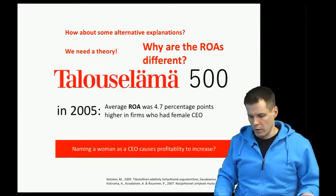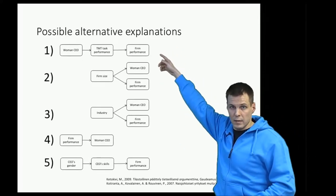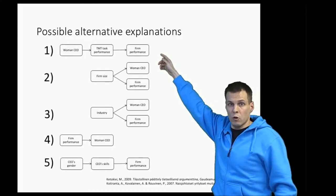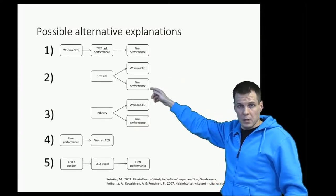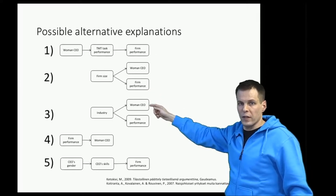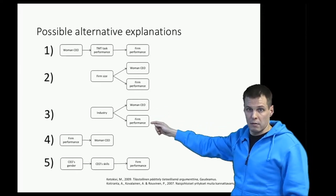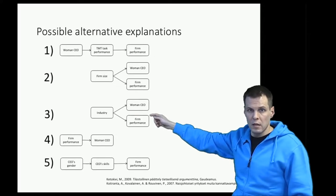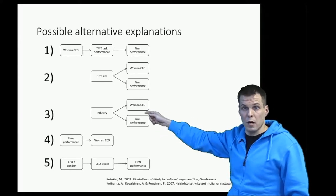We have several possible explanations. First, women as CEOs could cause firm performance — not directly, but because women facilitate better top management team work, which leads to better performance. Second, smaller companies may be more profitable and more likely to hire women — that would be a spurious relationship. Third, certain industries may be more profitable and more likely to hire women. For example, mining companies have large assets and thus low return on assets, and they are more likely to be run by men, suggesting a possible spurious correlation.